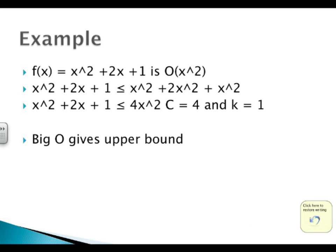Let's move on to a mathematical example. We have f of x equals x squared plus 2x plus 1 is Big O of x squared. We have our constants c and k: c equals 4 and k equals 1. Whenever we have these two functions and x is greater than k equals 1...